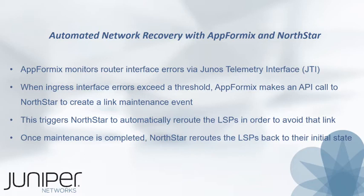Here is how we achieve this. The Juniper AppFormix analytics platform monitors router interface errors via Junos telemetry interface. When ingress interface errors exceed a threshold, AppFormix makes an API call to Northstar to create a link maintenance event. This triggers Northstar to automatically reroute the LSPs in order to avoid that link.